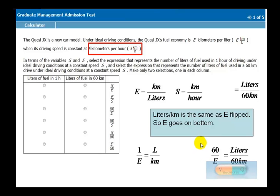So again, you look at this, and you say, hmm, what do you want? You want liters per 60 kilometers. You realize that one of these two pieces of information, the E is the closest one in terms of liters and kilometer.